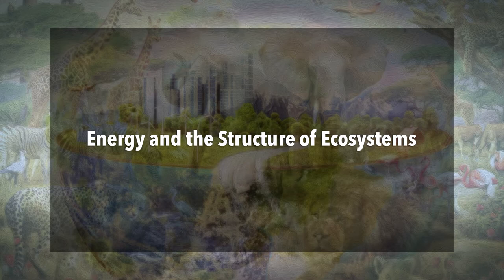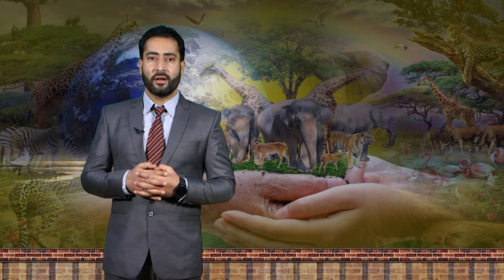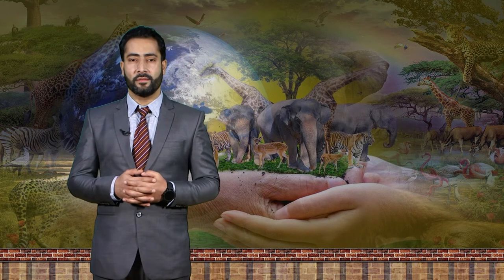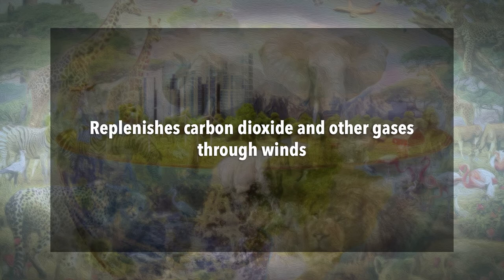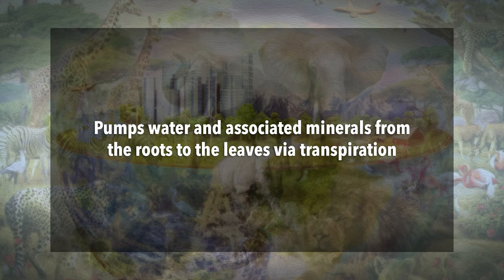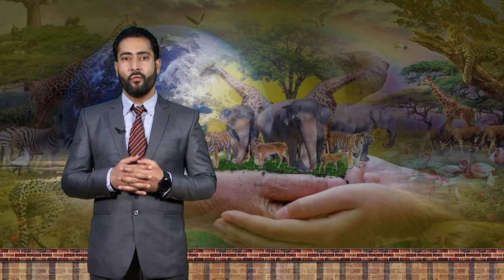Now energy and the structure of the ecosystem. Ecosystems and their component species cannot exist without a constant supply of energy to maintain the biotic structures and their functions. The source of this energy is in almost all cases the sun. The sun runs the energy, carbon, and nitrogen fixation of green plants. Less obviously, the sun does many other things for ecosystems: it evaporates and lifts water from the ocean and delivers it to land ecosystems, replenishes carbon dioxide and other gases through winds, pumps water and associated minerals from the roots to the leaves through transpiration, and provides nutrients through weathering.